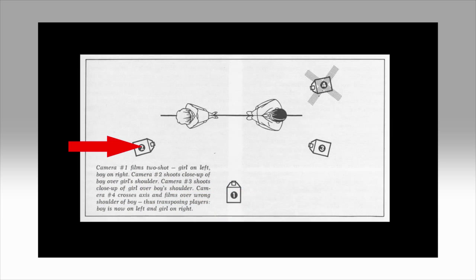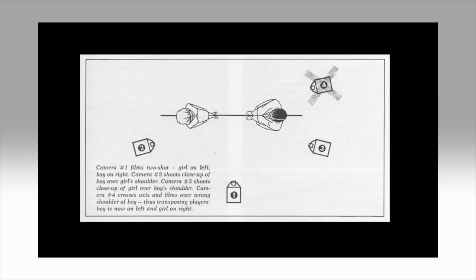Camera setup number two films the actor on the right and camera setup number three films the actor on the left. Let's look at all three shots edited together in order.